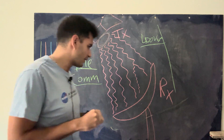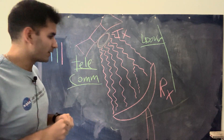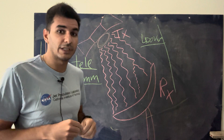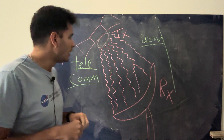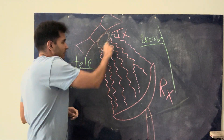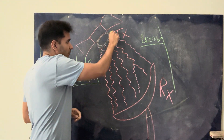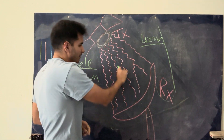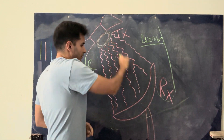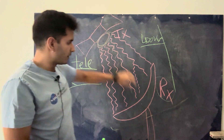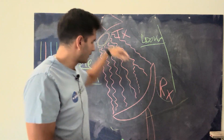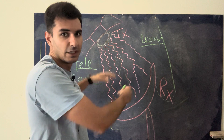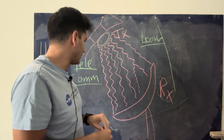What you may notice is that there are three different things that need to happen in order to establish a good telecommunications link. First, you need something to transmit. You need something to receive, and you need to send something in between. So there's the transmitter, there's the receiver, and then there's the actual waves which carry the signal. This is an electromagnetic telecommunications system.